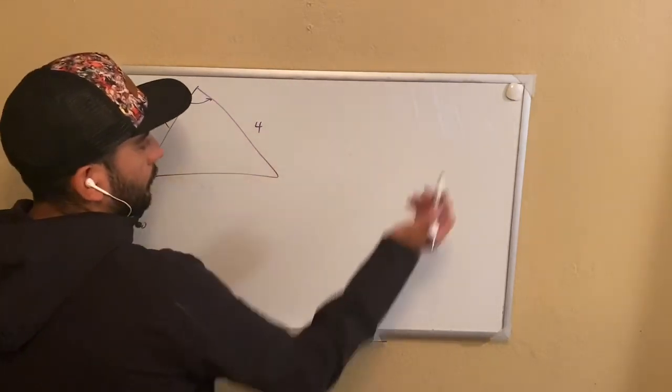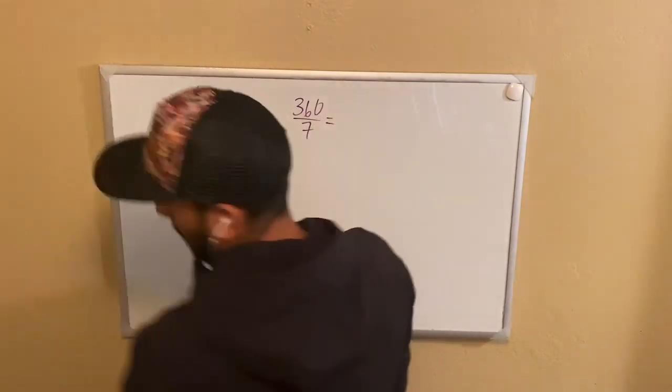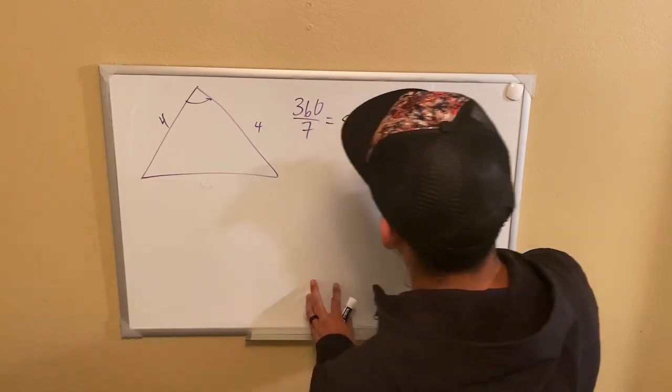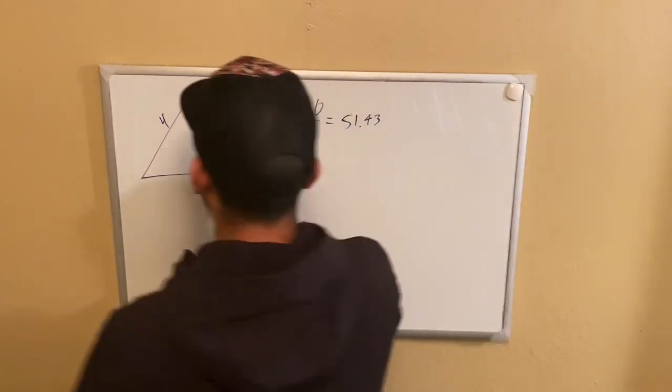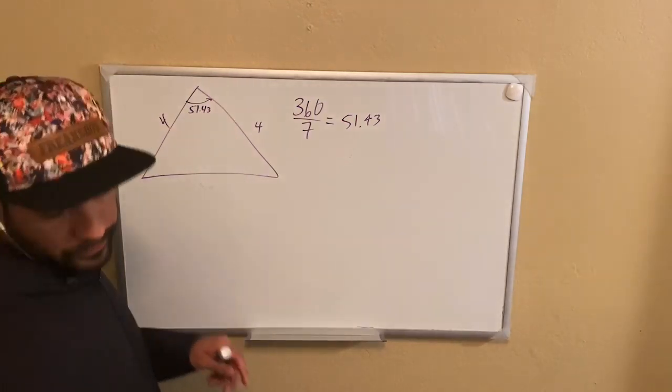And now all around it's going to be 360 degrees, so all I really have to do is divide 360 degrees by seven. That's going to give me 51.43. So now we know that the angle here is 51.43.